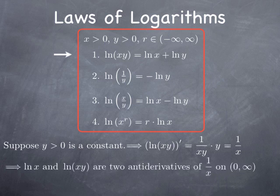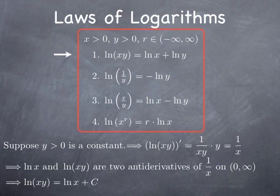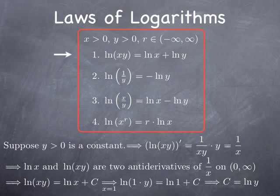That means ln(x) and ln(xy) are two anti-derivatives of the same function 1 over x on the same interval (0, ∞). But if two anti-derivatives of the same function exist on the same interval, they can only differ by a constant. Therefore ln(xy) equals ln(x) plus some constant c. To find c, plug in x equals 1: we get ln(y) equals ln(1) plus c, and since ln(1) is 0, c equals ln(y). Substituting back, we obtain ln(xy) equals ln(x) plus ln(y) — the formula we wanted to establish.